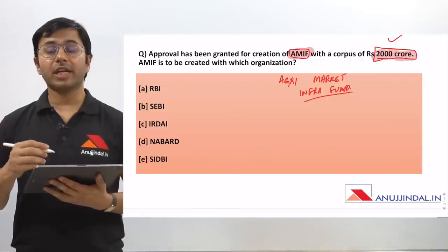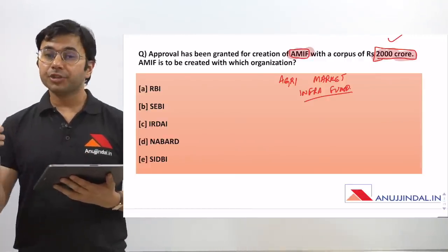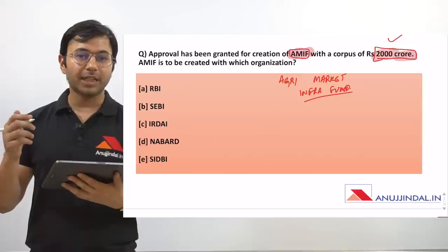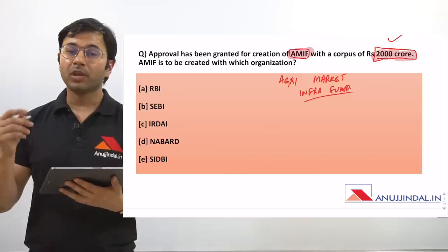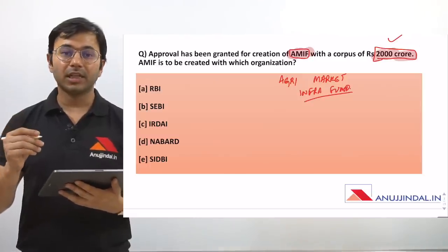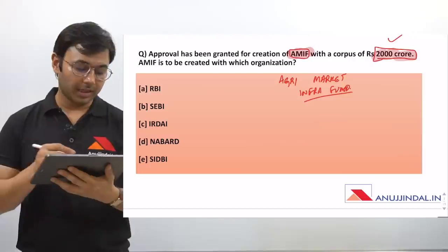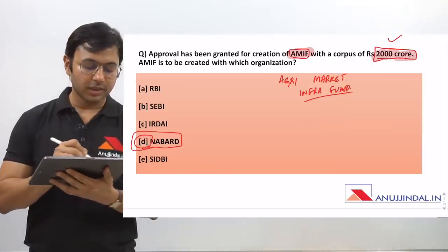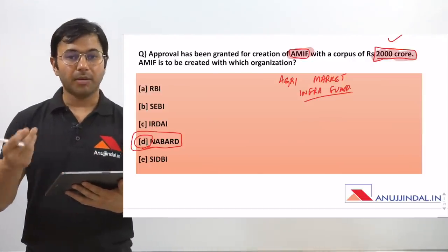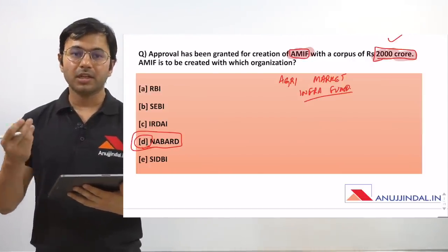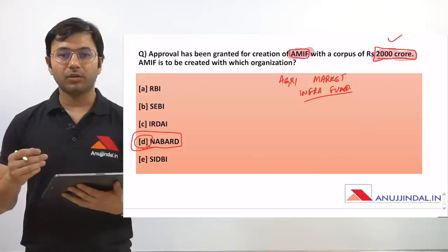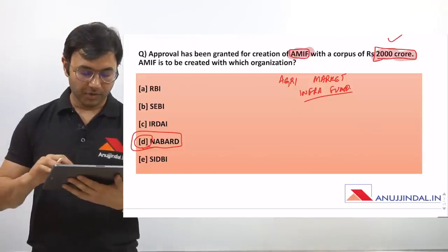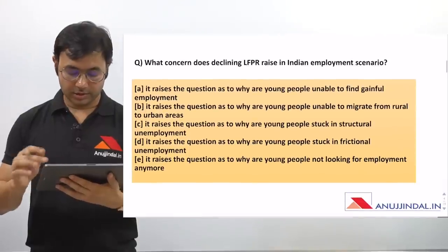Since AMIF is connected with agriculture, there are high chances it can be asked in the NABARD examination. The answer to this question is D — NABARD itself — because NABARD looks after agriculture regulation as well as its development.